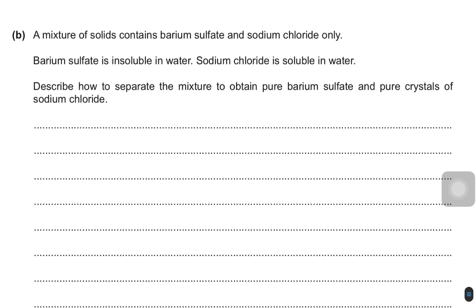This question has been taken from a recent paper. It says: a mixture of solid contains barium sulfate and sodium chloride only. Barium sulfate is insoluble in water; sodium chloride is soluble in water. Describe how to separate the mixture to obtain pure barium sulfate and pure crystals of sodium chloride.